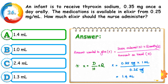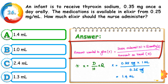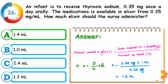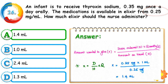Using the simple formula: amount to give = dose ordered divided by amount on hand, multiplied by quantity — that is X = D/H × Q. The dose ordered is 0.35 mg, the drug on hand is 0.25 mg, and the available quantity is 1 ml. After simplification, the final calculation gives 1.4 ml, which is the amount of elixir to administer.